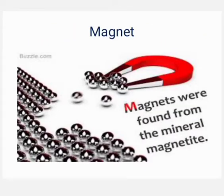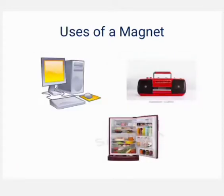What is a magnet? Magnets were formed from the mineral magnetite. What are the uses of a magnet? It is used in the computer, tape recorder, radio, refrigerator, etc. In the telephone and in many devices magnets are used.